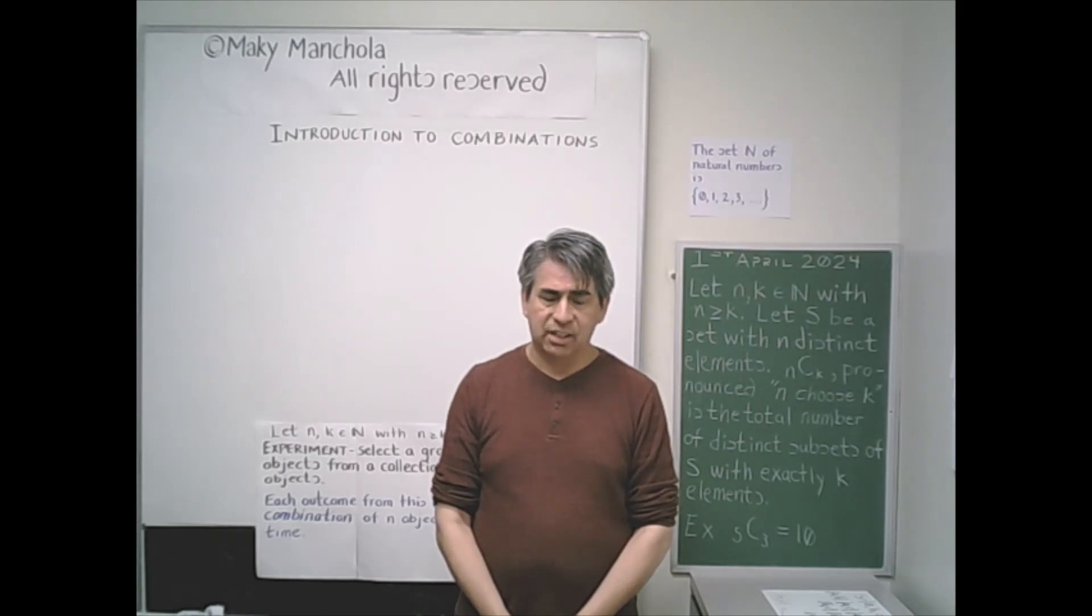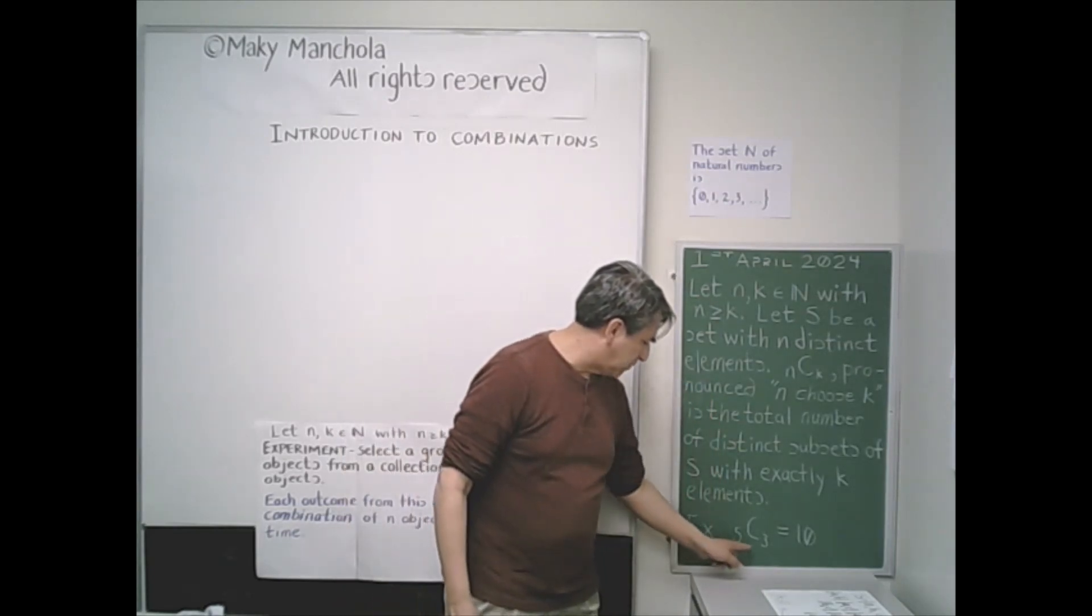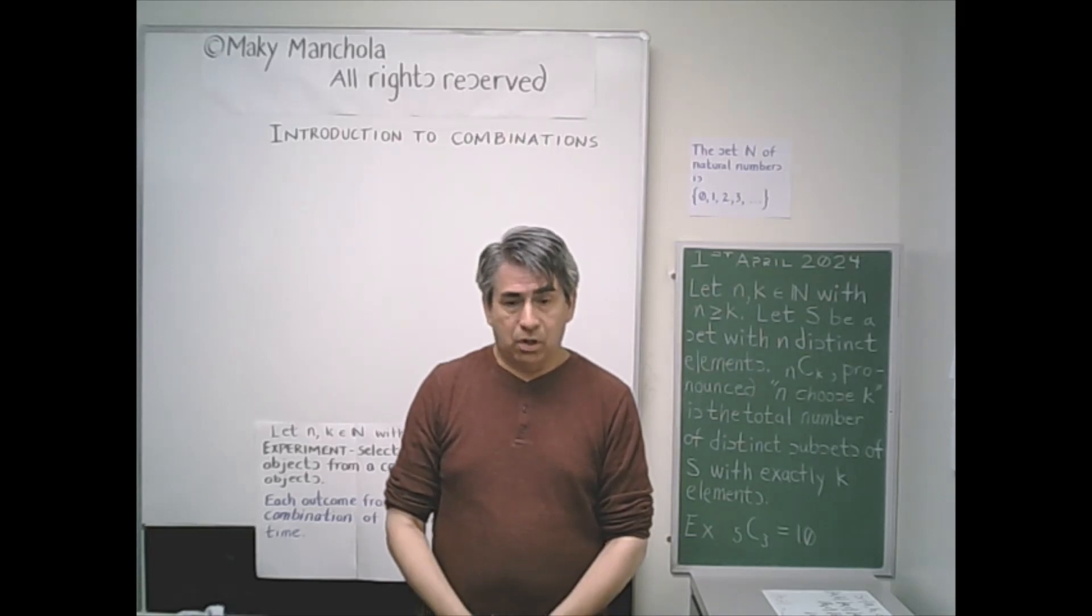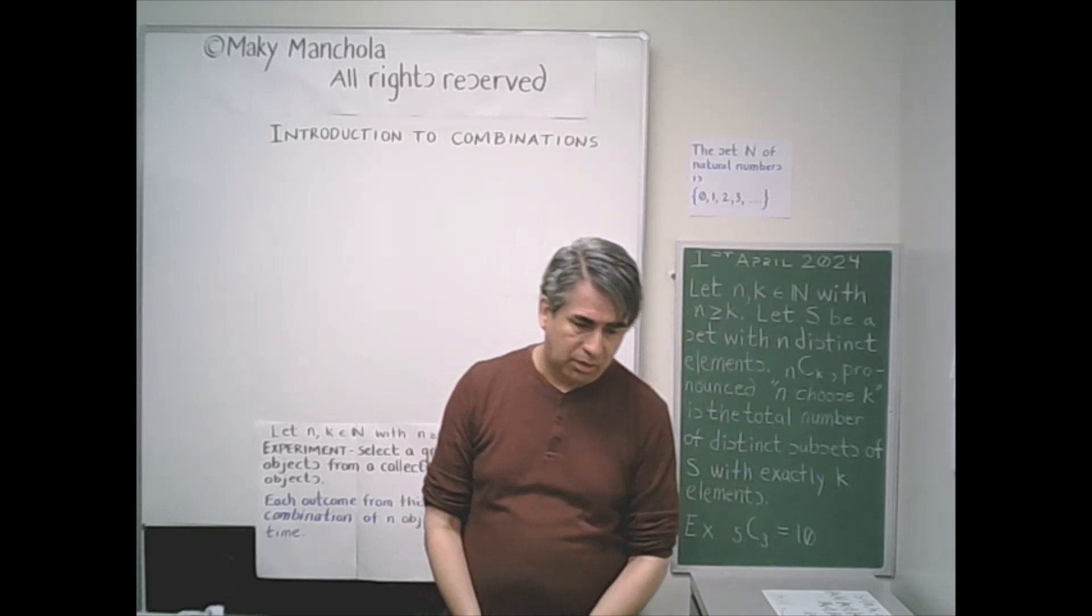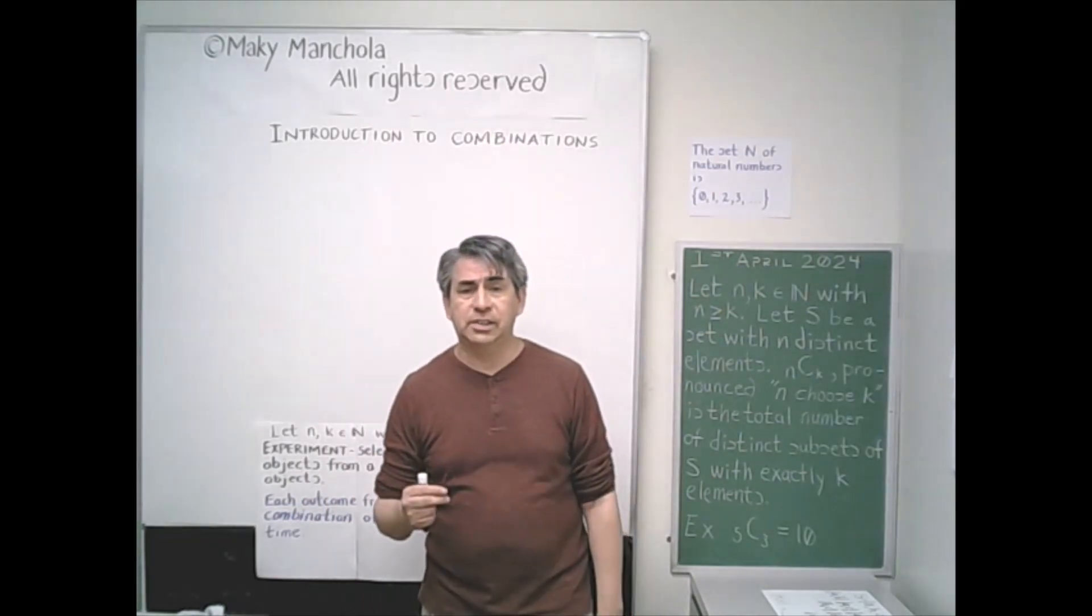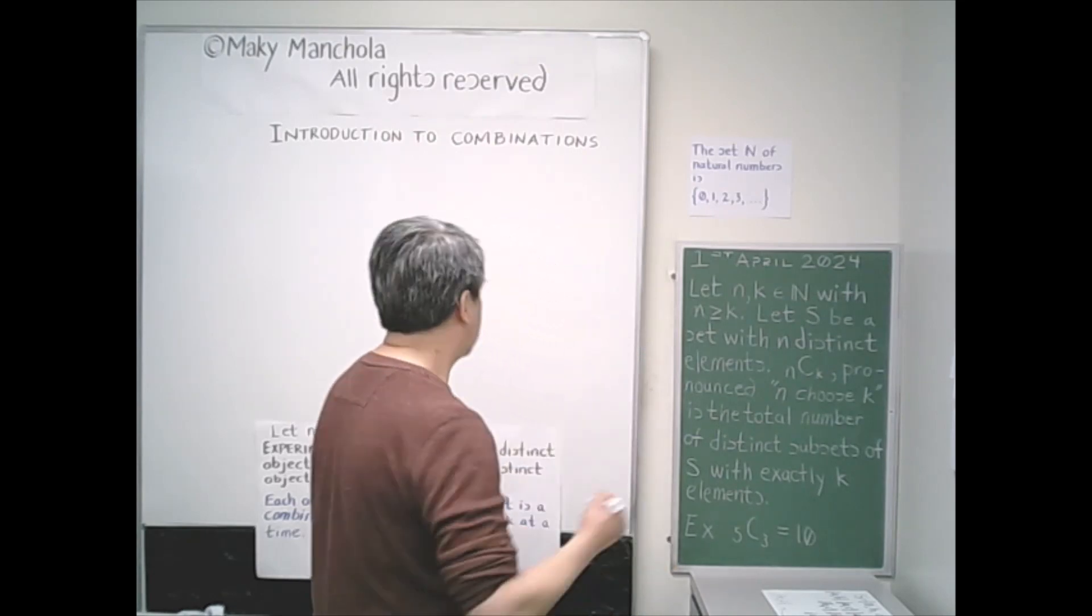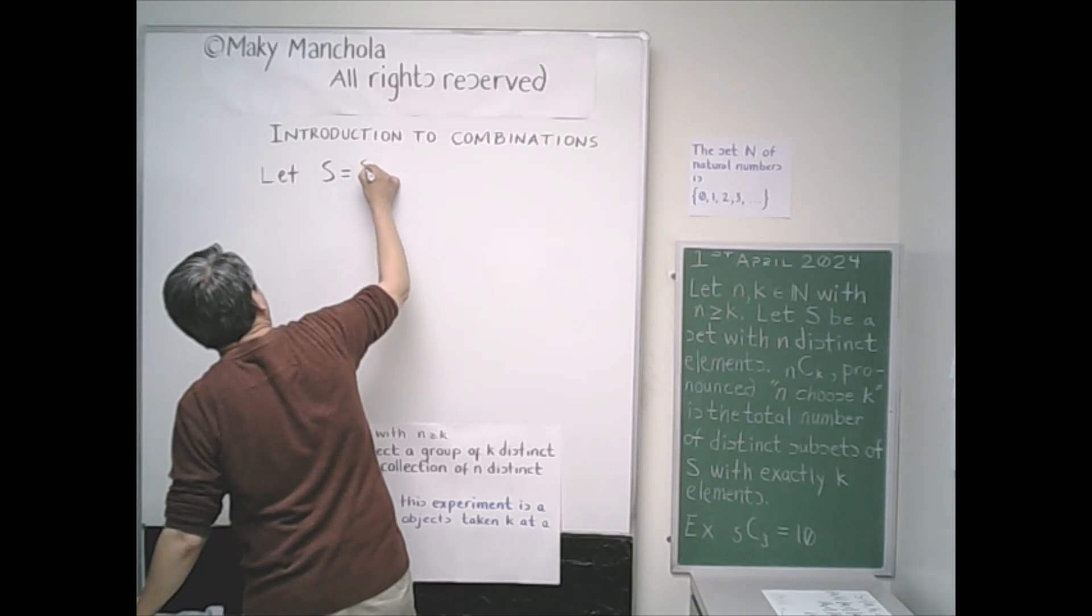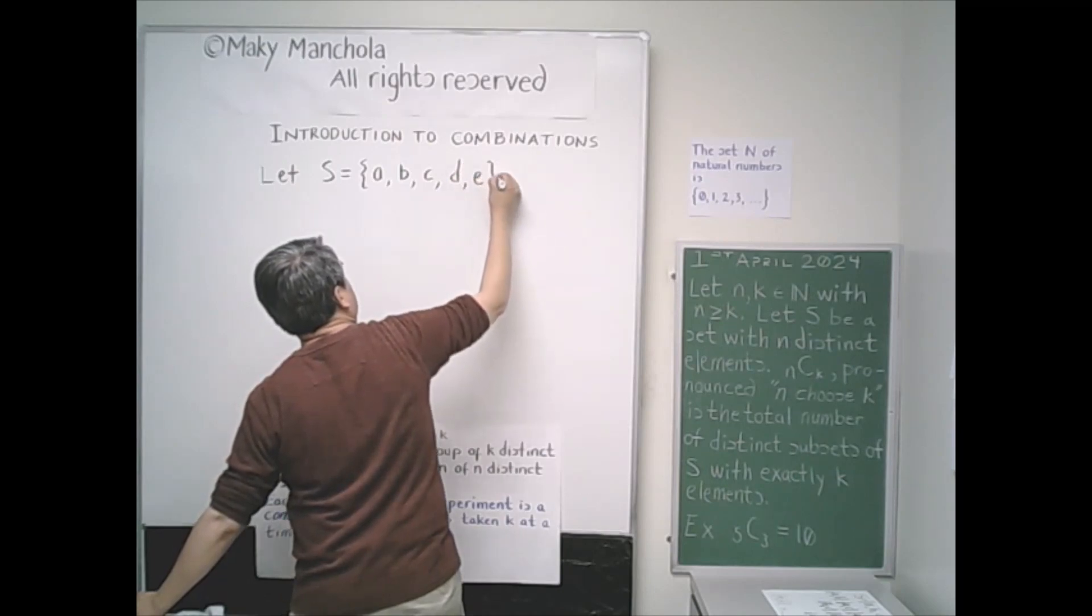For example, 5 choose 3 is the total number of distinct three element subsets of a set that contains five elements. 5 choose 3 happens to be 10. To see that, we would like to list all distinct three element subsets of a set that contains five elements.